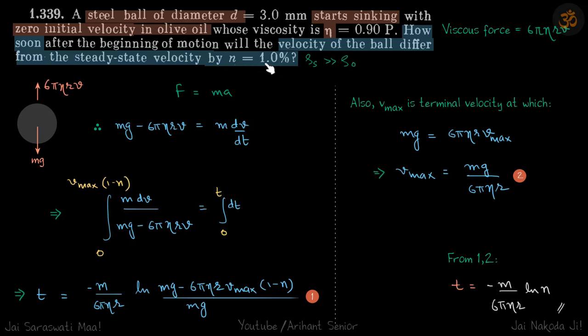So if steady state velocity is v, v0, then he is asking at what time we will get the velocity of 0.99 v0. So very practical setup and a very practical question which can be used to find the viscosity of a liquid. So let's solve the problem now.